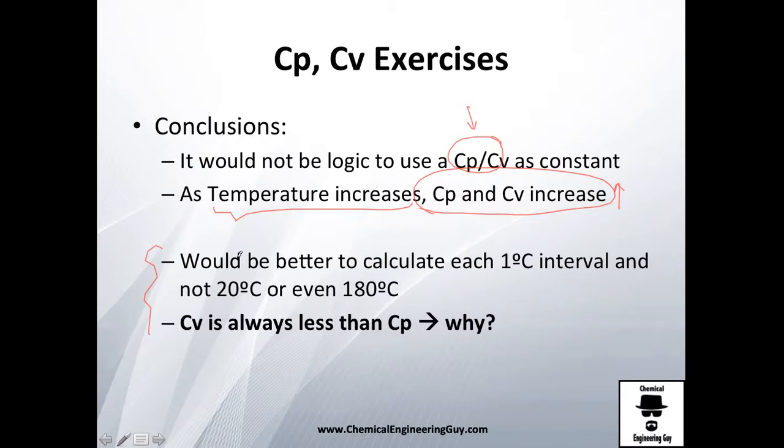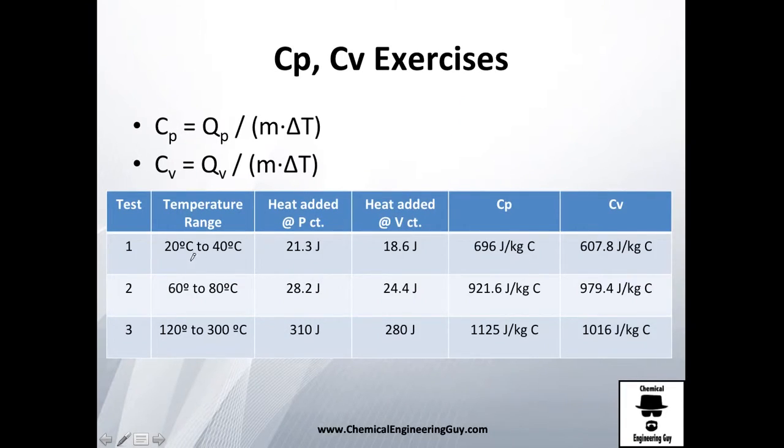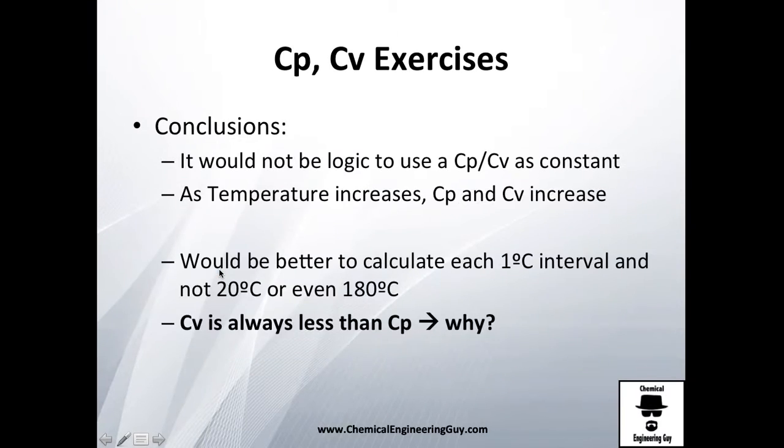Other conclusions to improve the laboratory experiment will be to, instead of using intervals as 20 Celsius or 180 Celsius, why not use 1 Celsius? Of course you will have a lot of ranges from 20 to 21, 21 to 22 and so on. You will need to make a lot of experiments, but I think it will make it worth it for you to get to know the difference in Q, Cp, Cv and so on.